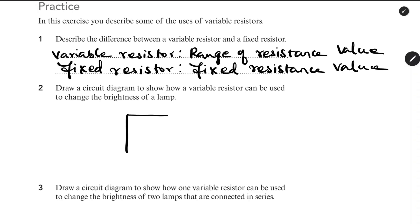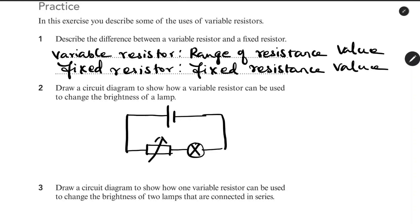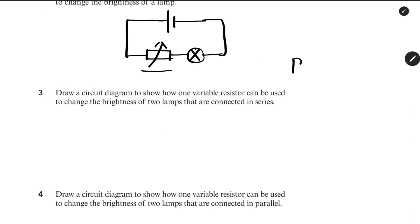In a simple circuit, we have a cell/battery, a variable resistor, and a lamp. Connect them in series so we can adjust the brightness of the lamp. If we increase the resistance, the current value is less and the brightness is less.